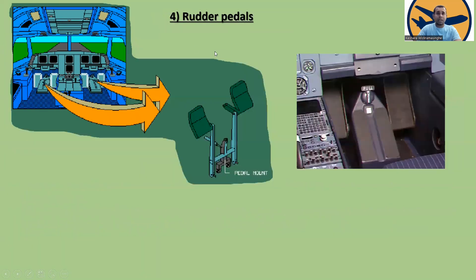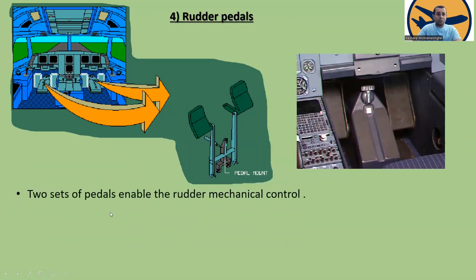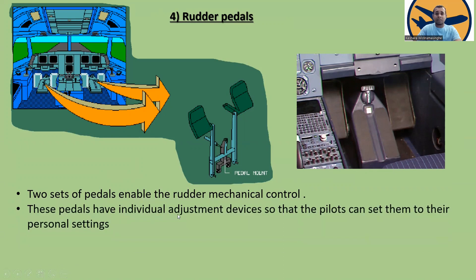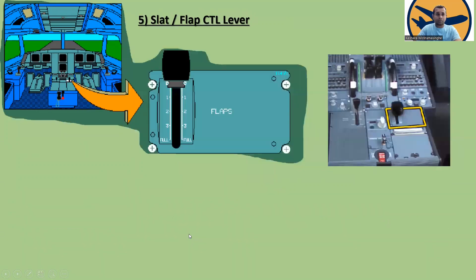Here are the rudder pedals — you can see the actual picture and diagram. The two sets of pedals enable rudder mechanical control. These pedals have individual adjustment devices so that the pilots can set them to their personal setting.